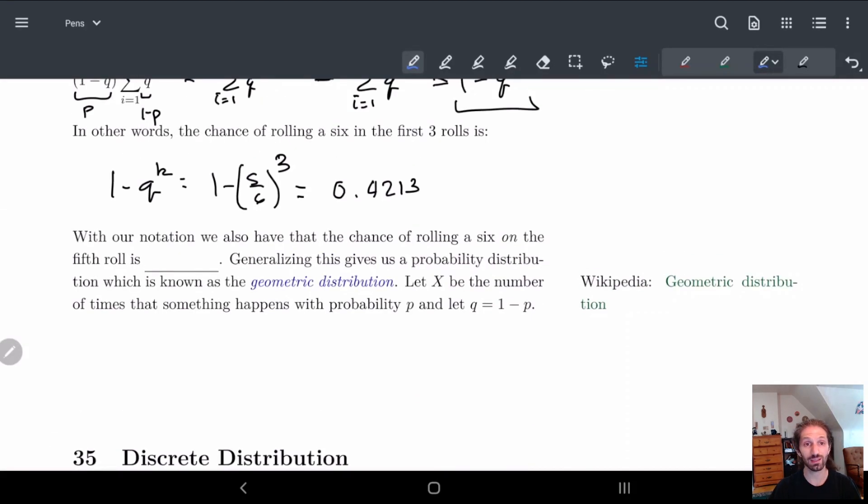And so that's basically the geometric distribution. So the chance of rolling a six on the fifth roll, right? So this actually becomes easy. Fifth roll, well, it's just q to the four. So for us, it's 5/6 to the four, one over six. So this is the fifth roll.